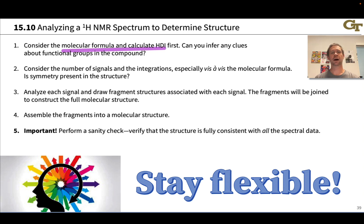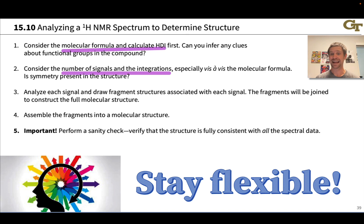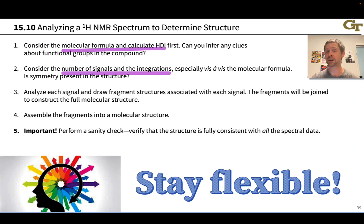Then I would encourage you to look at the number of signals and the integrations. We did this previously when we were generating educated guesses of NMR spectra from a molecular structure. Consider the number of signals you see and their integrations, particularly with respect to the molecular formula. Make sure the integrations match up with the total number of hydrogens in the compound. If they don't, you're probably looking at a symmetry situation.